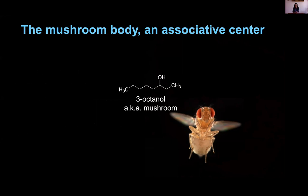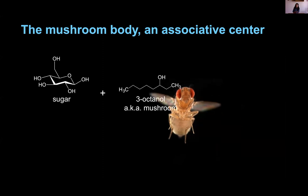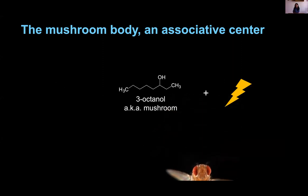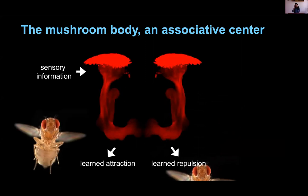The mushroom body has been studied for many years as an associative brain center, especially for olfactory associative memory. We can train flies to recognize an odor and associate it with a particular outcome. For example, the odor 3-octanol doesn't have an innate valence to a fly, but you can pair it with sugar rewards and the fly will learn to be attracted to it. You can also take the same odor and pair it with punishment like electric shocks, and the fly will associate that sensory stimulus with a bad outcome. So the mushroom body is required for the formation of associative memory — it represents the outside world and transforms sensory representations into learned behaviors like attraction or repulsion.